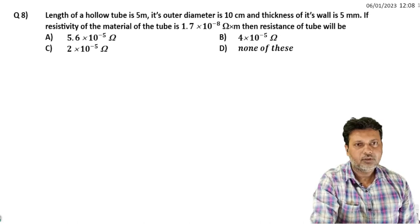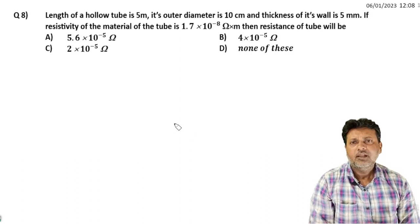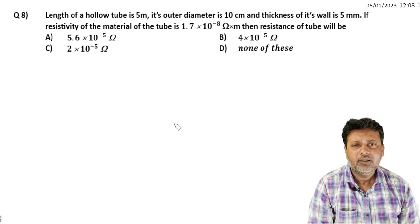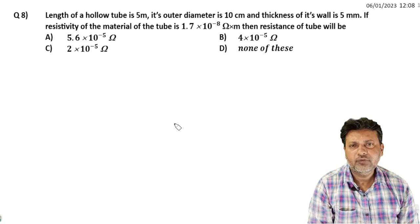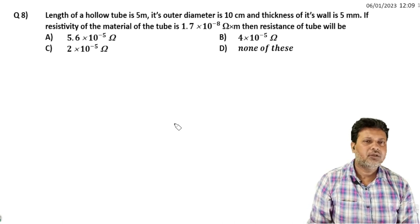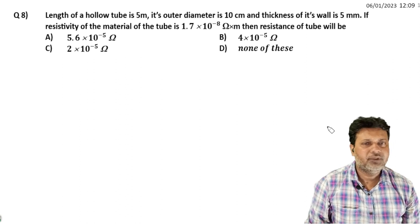So the next question: length of a hollow tube is 5 meters. Its outer diameter is 10 centimeters and thickness of its wall is 5 millimeters. If resistivity of the material of the tube is 1.7 times 10 to the power minus 8 ohm meter, then the resistance of the tube will be?